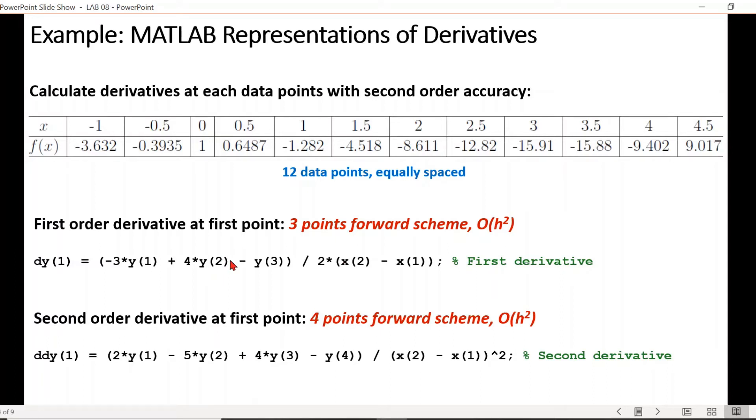For example, x1 represents the data point minus 1, x2 represents the data point 0.5. y1 represents function values minus 3.632 at data point minus 1. y2 shows the function magnitude at data point minus 0.5.